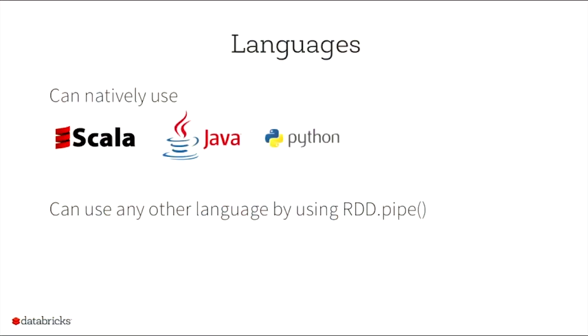I showed it in Scala, but you can also write it in Java or Python. And it's a common misconception that you cannot write your logic in any other language, but using RDD dot pipe you can shell out to any arbitrary external language through a shell, so you can write your own custom logic through any other language as well.